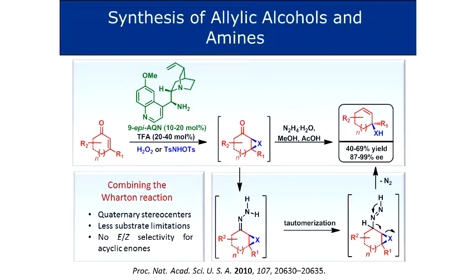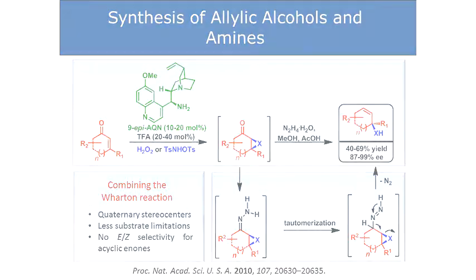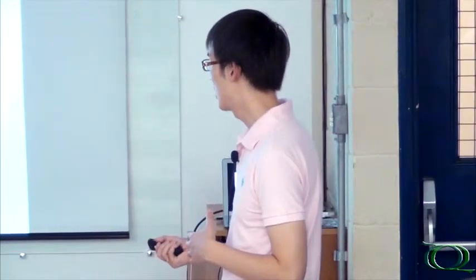What we only did was the last part — merging this part with this part — basically adding hydrazine hydrate, so you're able to form allylic alcohols and amines. Yields are not always great, but the ee is usually above 85% up to 99% ee. The advantage of this approach is that you can generate quaternary centers, tertiary alcohols and amines at allylic positions, which are usually difficult to approach in synthetic chemistry. You also have much less substrate limitation compared to a lot of other chemistry used to furnish this type of product.